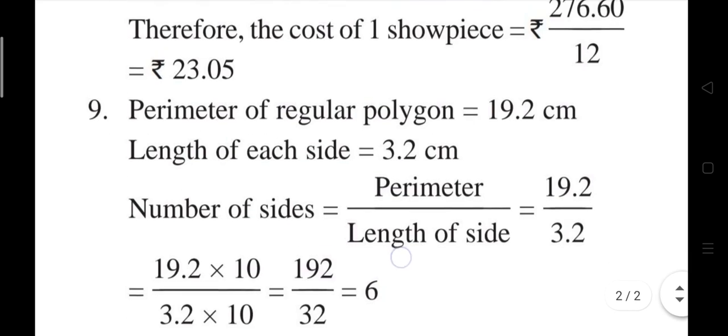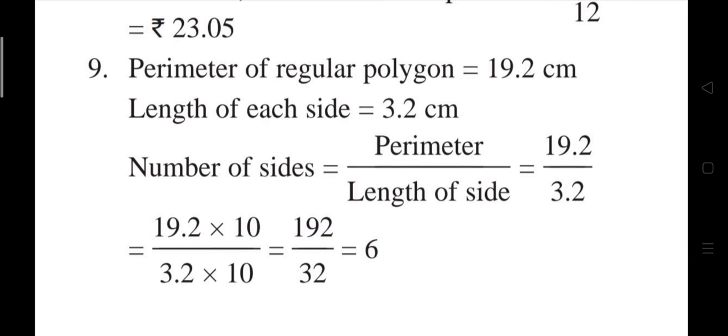Coming to the last question of this exercise, question 9: Each side of a regular polygon measures 3.2 cm. Polygons are geometrical shapes bounded by straight lines - 3 lines form a triangle, 4 lines form a quadrilateral, 5 form a pentagon, and so on. Find the number of sides of the polygon if its perimeter is 19.2 cm.